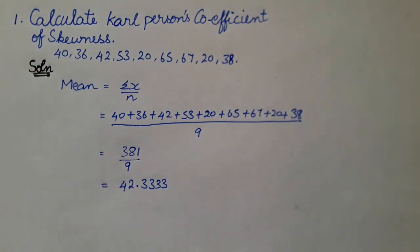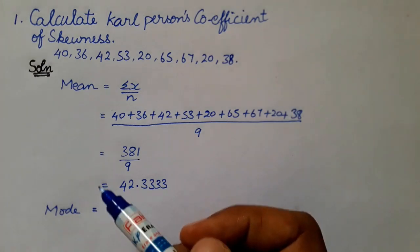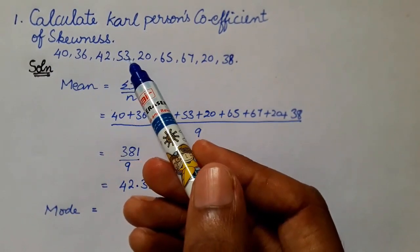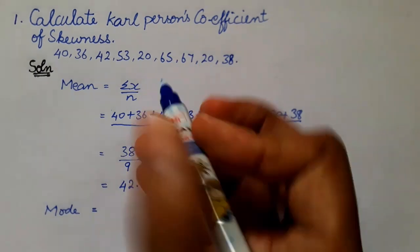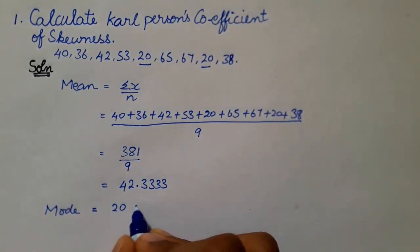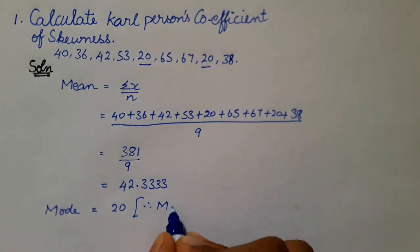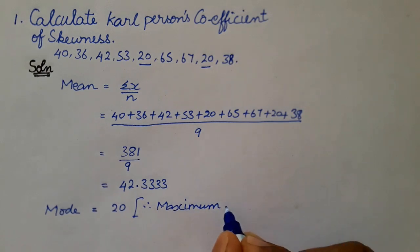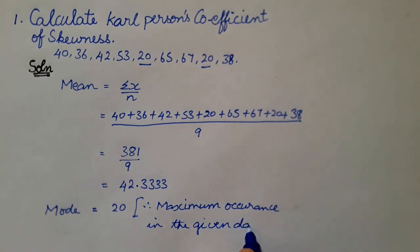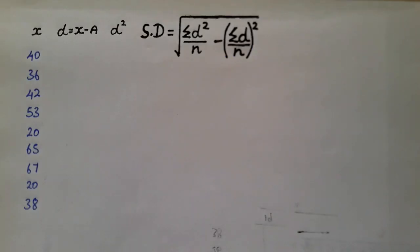Next we find the mode. For an individual series, the mode is whichever number is repeated most. Looking at the data: 40, 36, 42, 53, 20, 65, 67, 20, 38 — the number 20 appears two times. Therefore, the mode is 20, as it has the maximum occurrence in the given data.